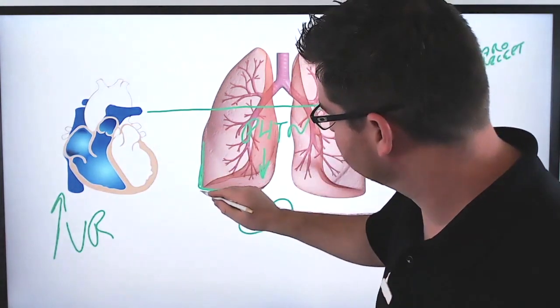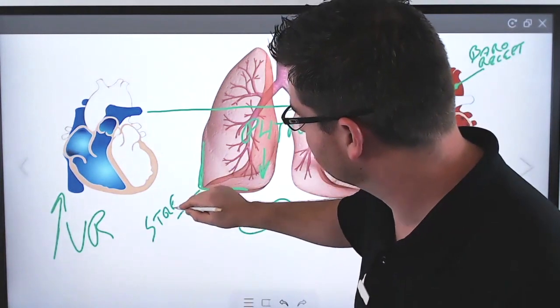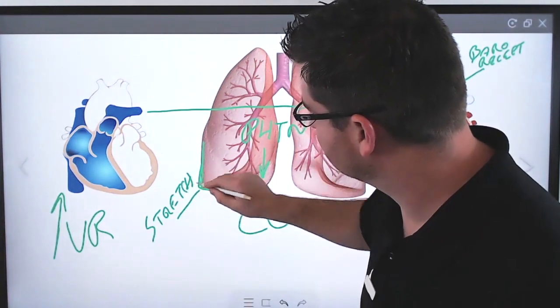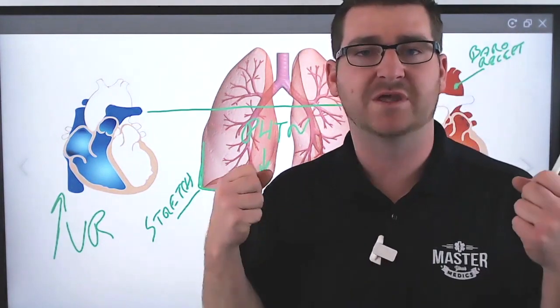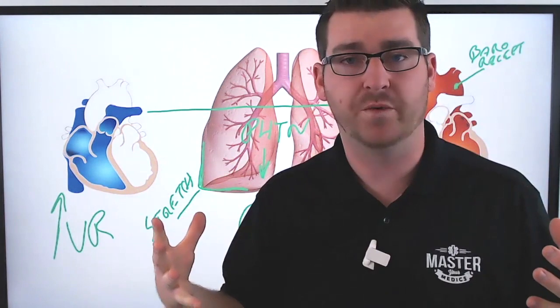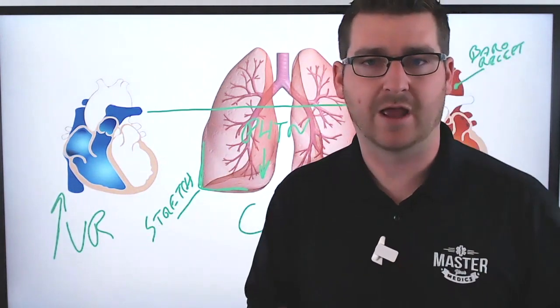And there are stretch receptors inside the lungs. And those stretch receptors are actually going to start producing more surfactants to help keep the alveoli open. And they also are going to decrease our cardiac output.